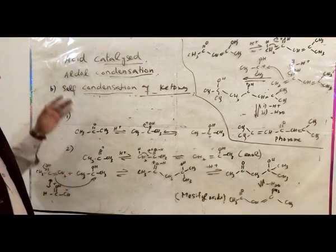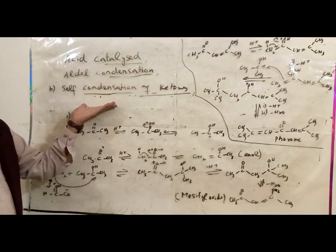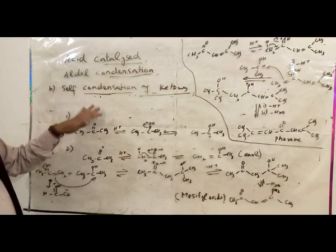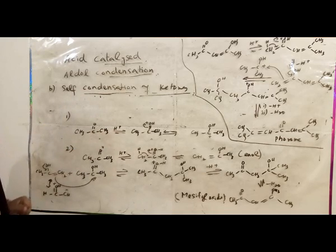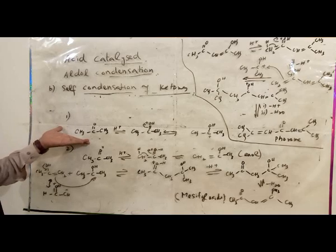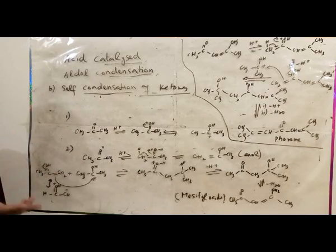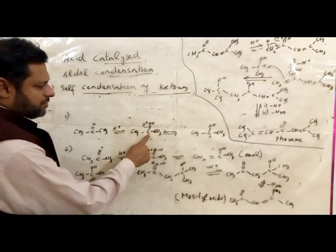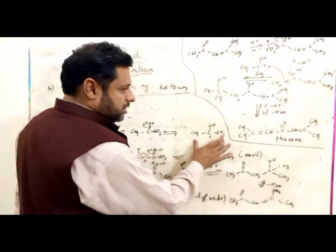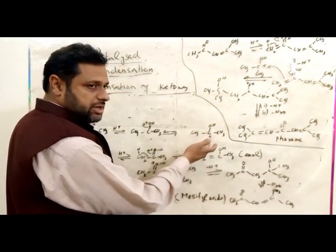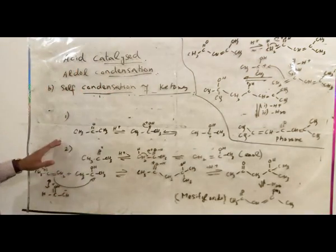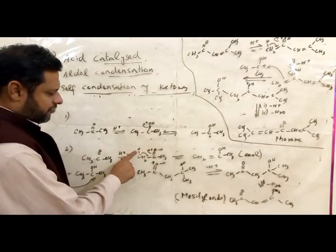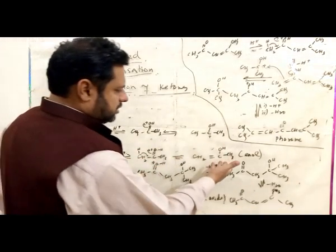Now we will discuss the second type of aldol condensation — the self-condensation of ketones. We will take the example of acetone in the presence of acid. The same two types of reactions take place: first, the acid reacts with the carbonyl group of acetone, the double bond shifts, and a positive charge comes on the carbon — this molecule is activated. Second, another molecule of acetone reacts with acid, a proton is added to oxygen, and one alpha proton is removed, giving the enol form of acetone.